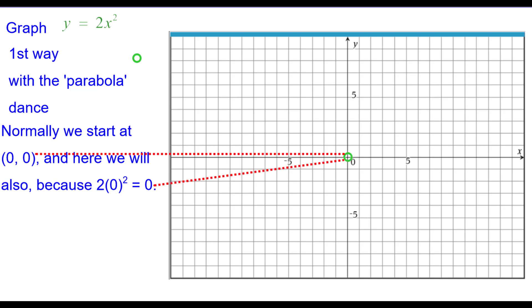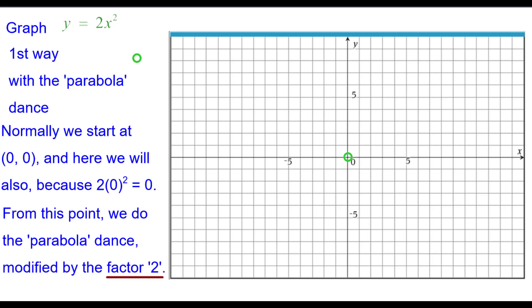So we'll plot at the origin at 0, 0 and from this point we will do the parabola dance modified by the factor 2, because of that 2 coefficient in front of x squared.